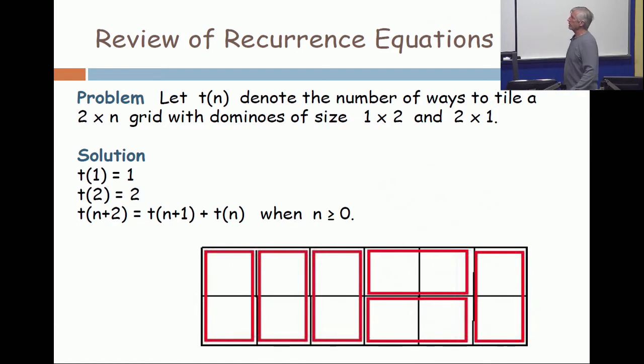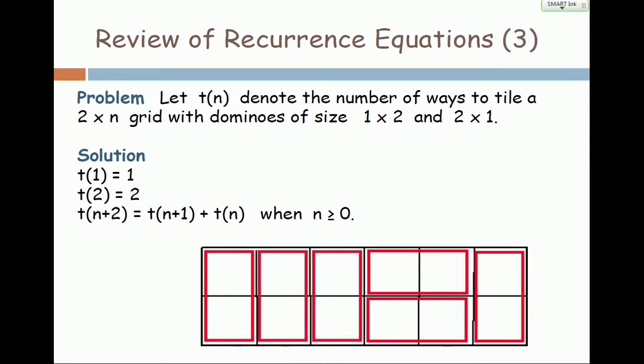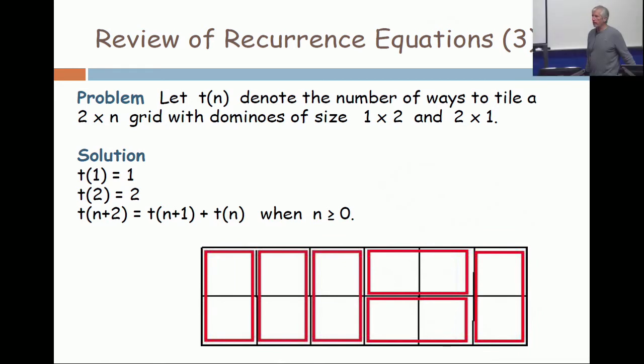Here's one that we did. This is the tiling of a 2 by n rectangle using dominoes, so 1 by 2s and 2 by 1s. And we got this recurrence. We called it at the time the Fibonacci recurrence. Again, this equation at the bottom allows you to compute t(n) for any value of n that you want, but it doesn't tell you about the quality of the solution.